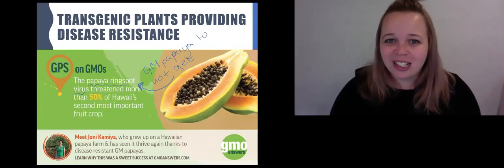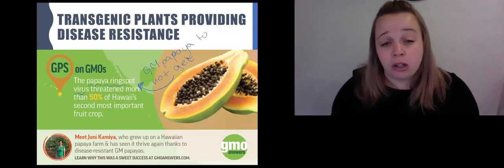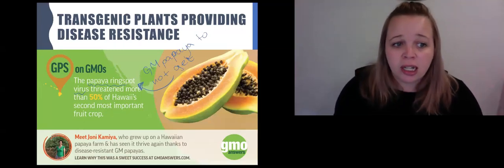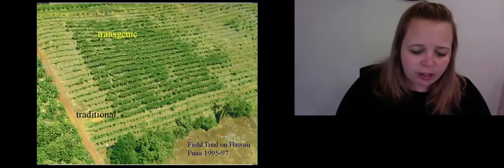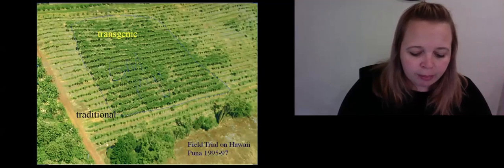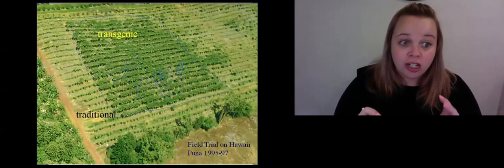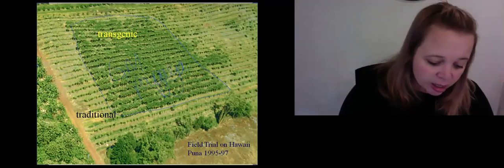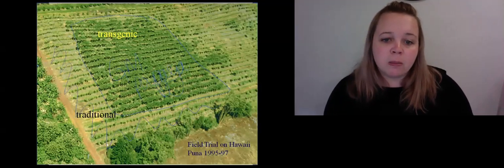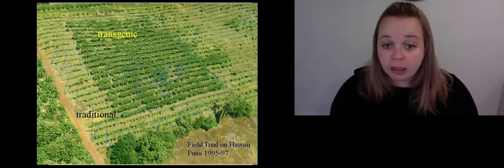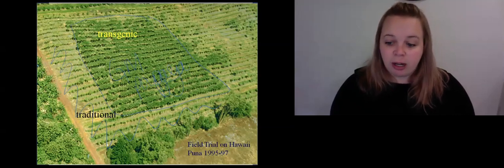Viruses just really interestingly don't just affect humans. They don't just affect animals. You can also get viruses that affect plants. You can get viruses that infect bacteria. This is a really cool trial so that you can see the difference. These ones all in the middle here, they're all GM papaya. You can see how much more green they are. You can see these ones over here, they're all dying, all the traditional ones. So they must be affected by the virus, but because the transgenic ones have a gene to provide them with disease resistance, that means that they aren't affected by the virus.